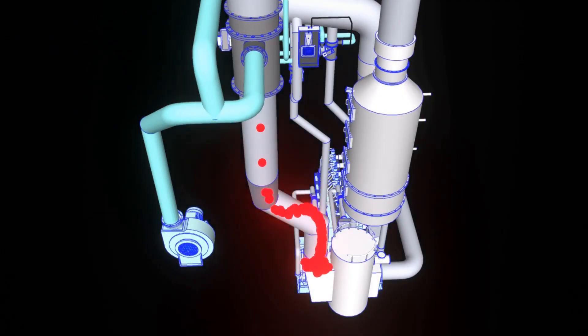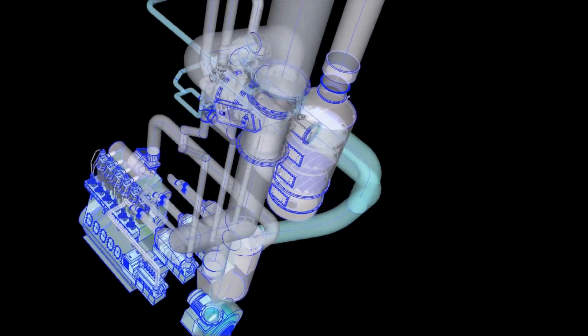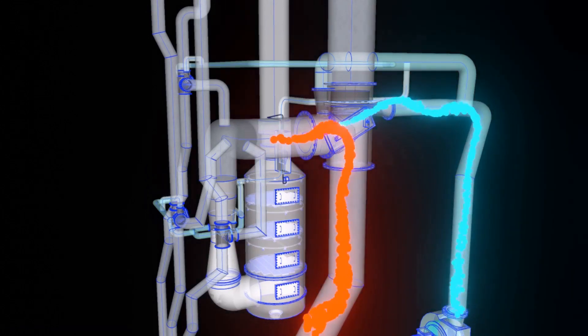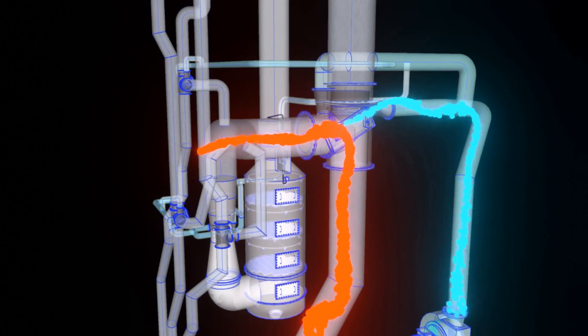After passing through the economizer, the exhaust gas will go to the three-way exhaust damper. The sealing air prevents the gas from going out to the atmosphere.